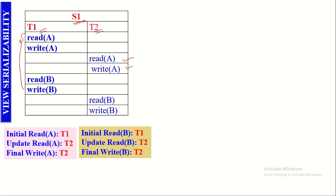According to the view serializability concept, we have to determine what transactions perform initial read, update read, and final write on each data item in the given schedule. There are two data items, A and B. On data item A: the initial read — the read operation performed at the beginning — is done by T1. Then update read, which means after the write operation on A, who performs the read on A; that update read is done by T2. There are two write operations, but the final write is done by T2. So T1 is doing initial read, T2 is doing update read, and T2 is doing final write.